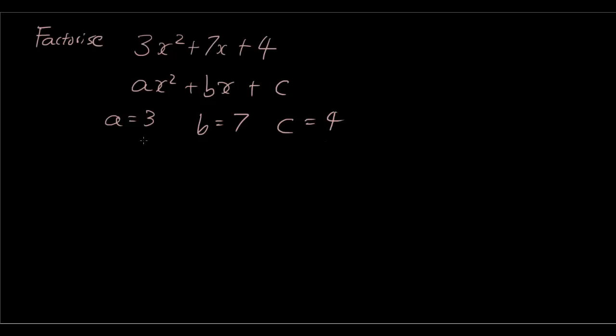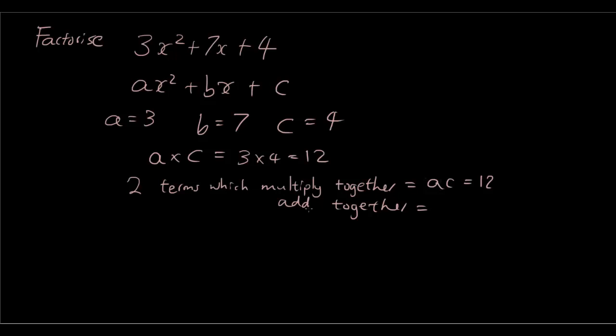Now the first thing I want you to do is find out a times c, find out what that number is. So a times c is 3 times 4 which is 12. Now I want you to think of two numbers that multiply together to give you ac, but add together to give you b. Two terms which multiply together to give you ac which is 12, and add together to give you b which is 7.